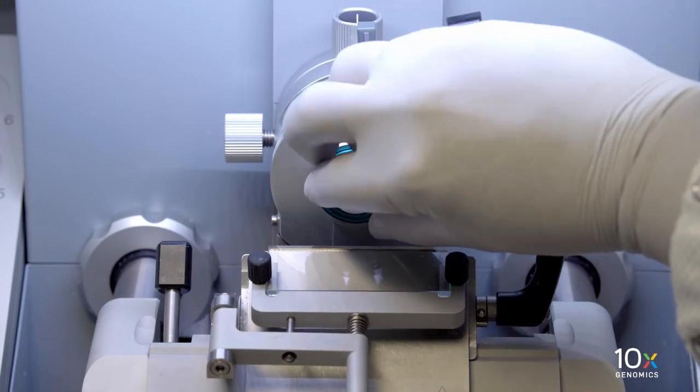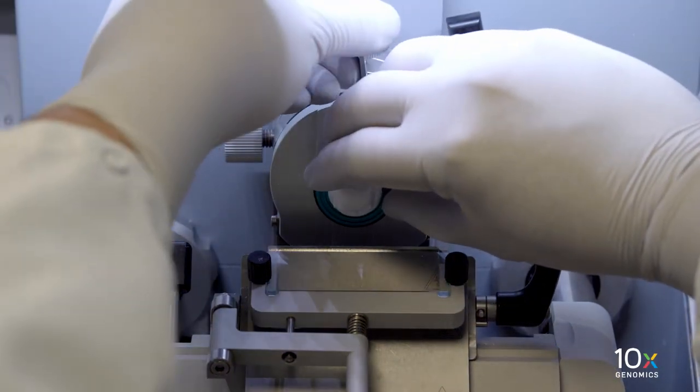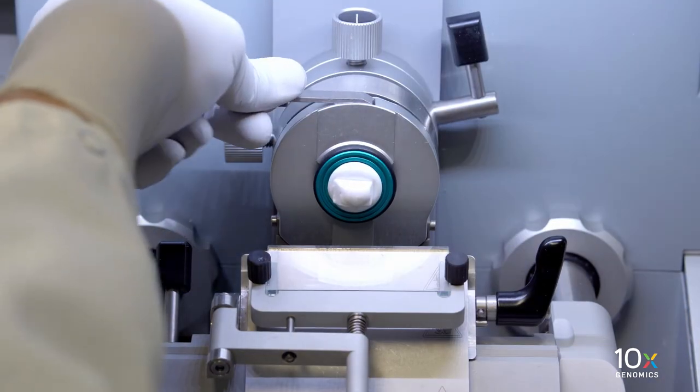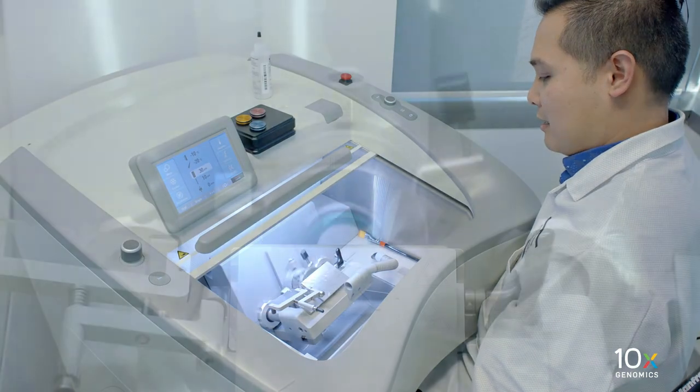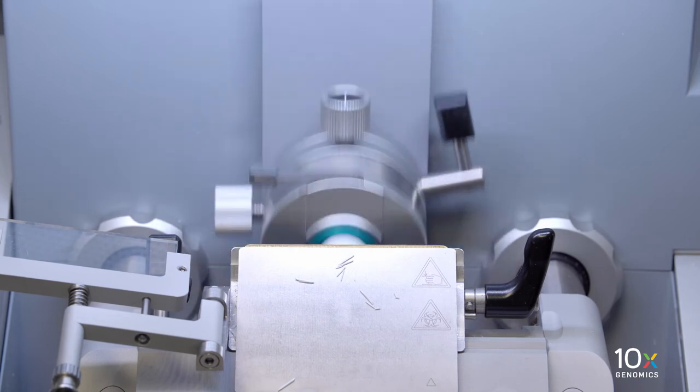We are ready to cryo section our OCT embedded tissue block. Install the stage with the tissue block onto the specimen head of the cryostat. Remove the excess OCT and expose the tissue. Continue sectioning until the tissue is visible.